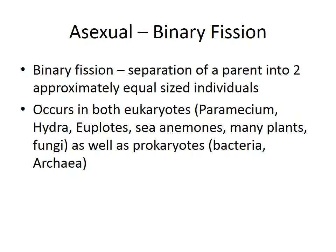Let's look at asexual reproduction. There are three ways of doing it. The first is binary fission — simply splitting that individual into two. Binary fission is the separation of a parent into two approximately equal-sized individuals. This occurs in both eukaryotes like paramecium, hydra, euplotes, sea anemones, many plants and fungi, as well as prokaryotes — bacteria and archaea.